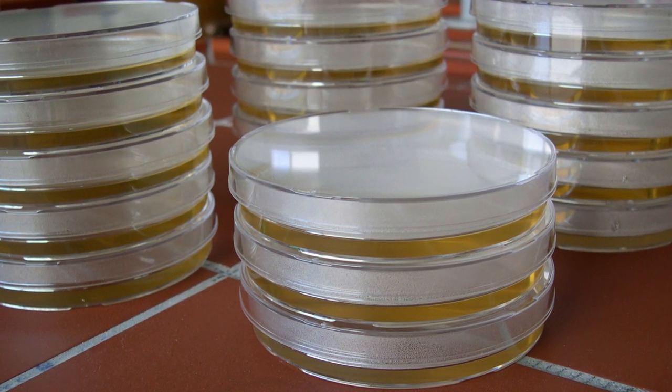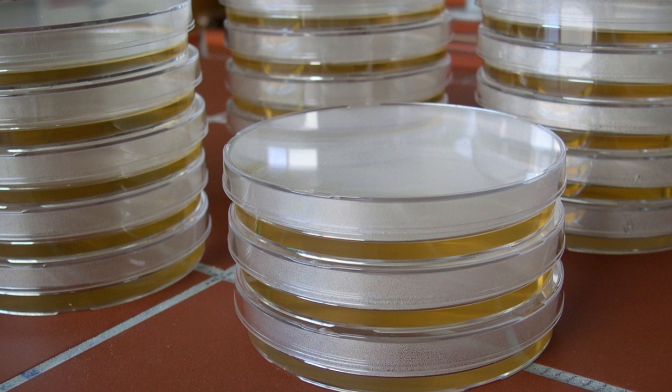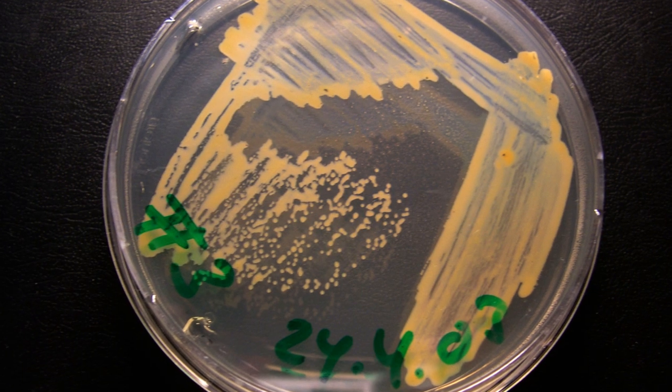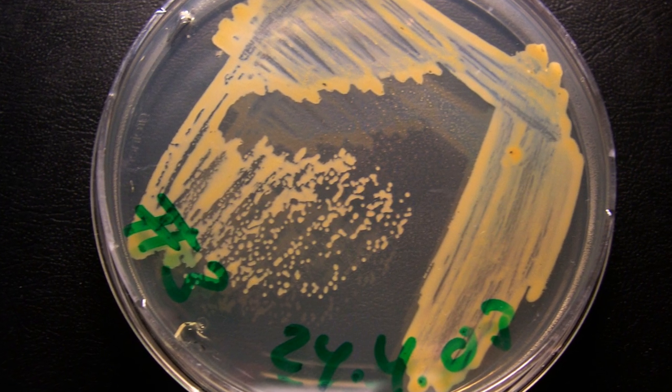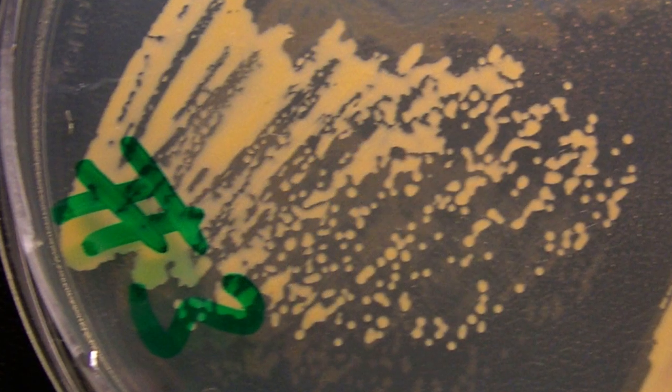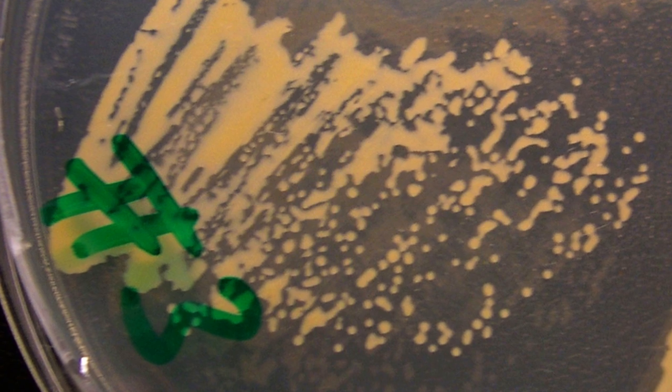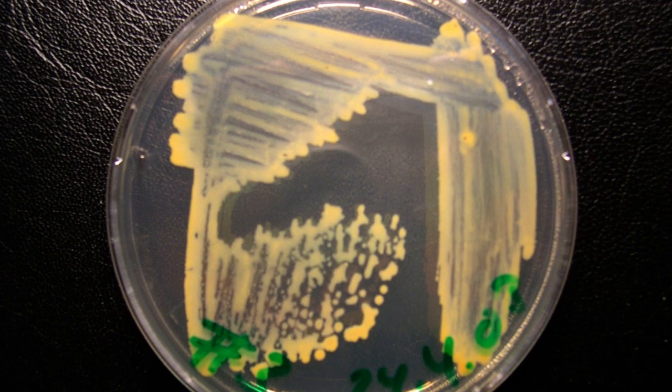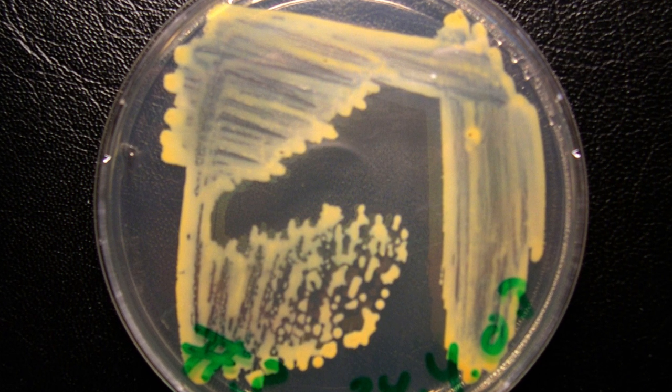And on those plates they basically are a very suitable way of growing bacteria and each of these dots that you see now that once was one single bacterial cell that grew into a colony. So they multiply exponentially and then after a couple of days you can see those colonies.